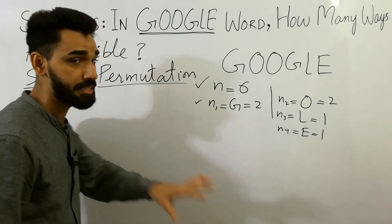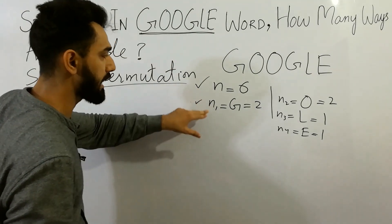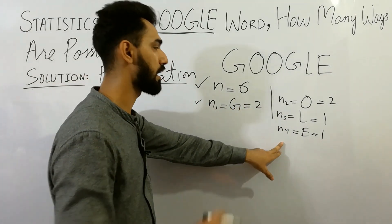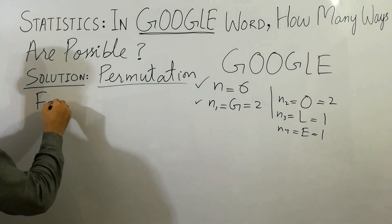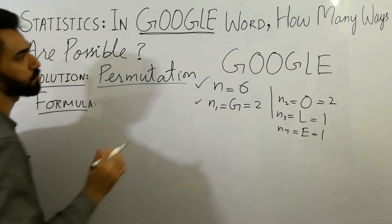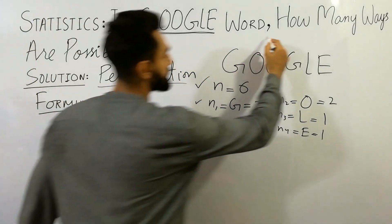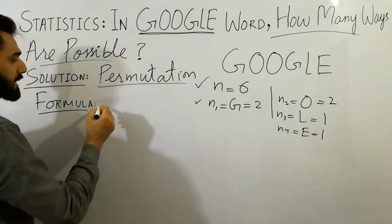And must remember that when we have any question, there are number of values and N1, N2, N3 are given, then we always use this formula. Must remember. This formula will be helpful to show how many ways are possible in Google word. Well, simply, now check the formula.